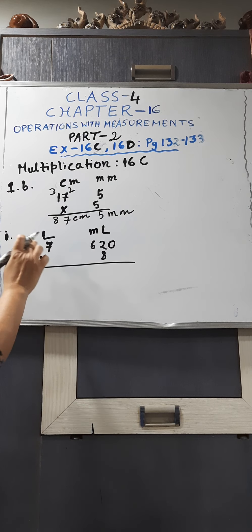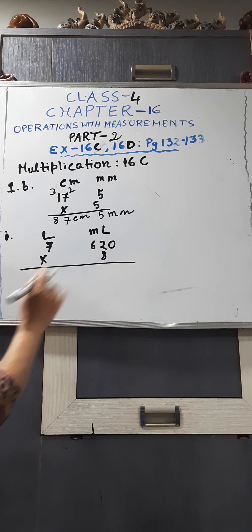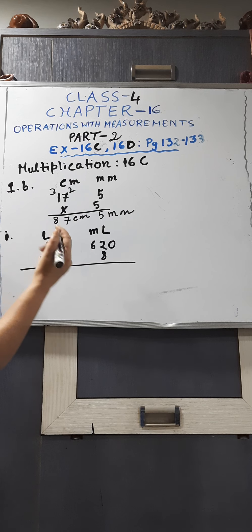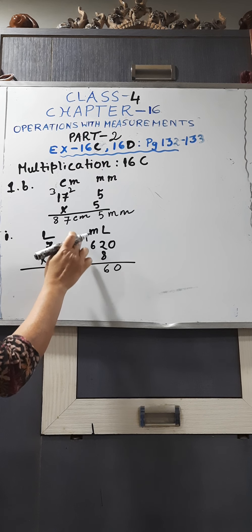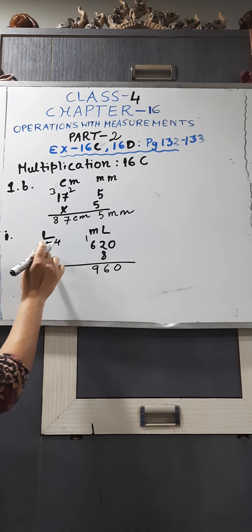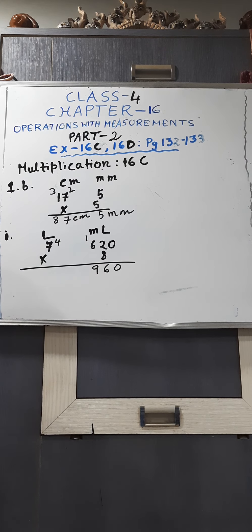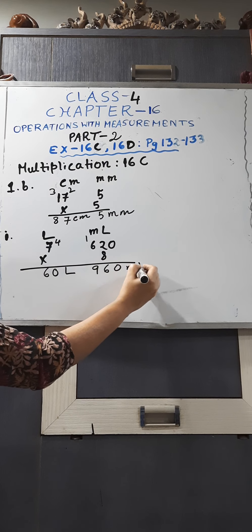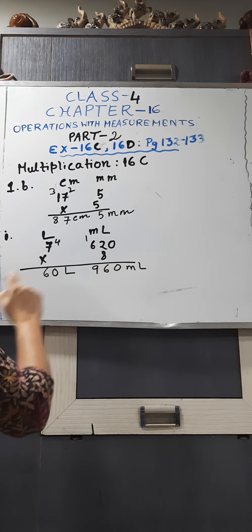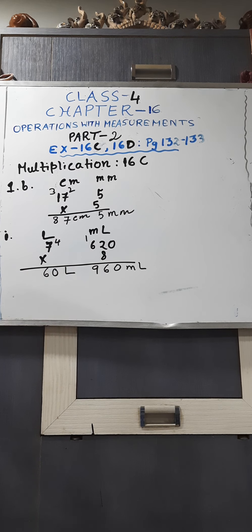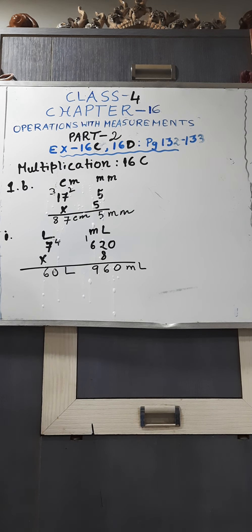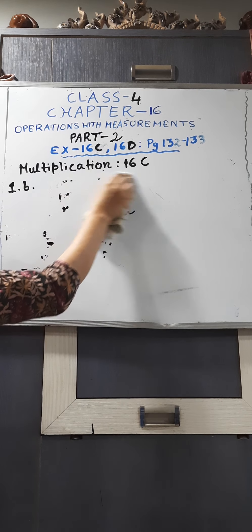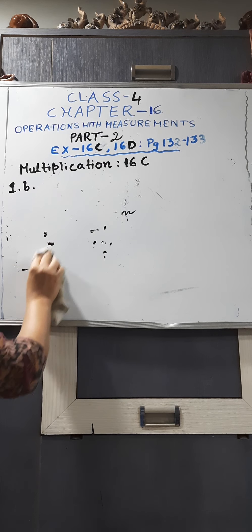Now 1i — the units are litre and millimetre. 7 litre, 620 millimetre multiplied by 8. We will do the simple multiplication: 8 zeros are 0, 8 twos are 16 — 1 is carried, 8 sixes are 48 plus 1 is 49 — 4 is carried, 8 sevens are 56 plus 4 is 60. Now we will write the units — litre and millimetre. From litre to millimetre, 3 steps are there, so 3 digits are in the millimetre place. Only write the units above and in the answer write the units properly according to the column.